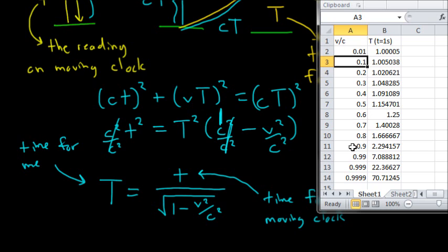But, if we go up to very high velocities, like 0.9 or 90% the speed of light, then, when 1 second elapses on the moving clock, I'm going to have seen that 2.3 seconds has elapsed for me. And, as I go up even higher, if I'm going at 99.99% the speed of light, it'll take 70 seconds for me to see the moving clock change by 1 second.